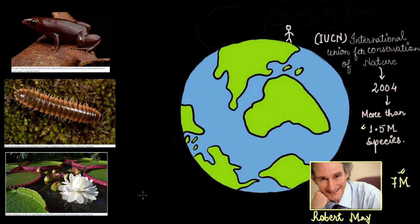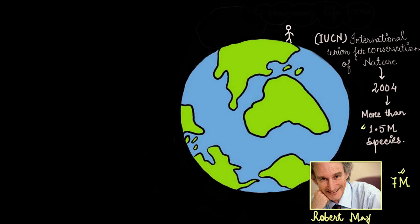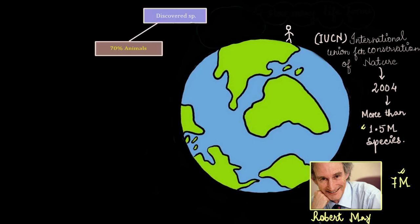These interesting new discoveries are not important for exams. On the flip side, what's important is sadly not very interesting. The examiner expects us to remember certain data as given by the IUCN. So talking about data, out of all the species recorded by IUCN, 70% are animals.